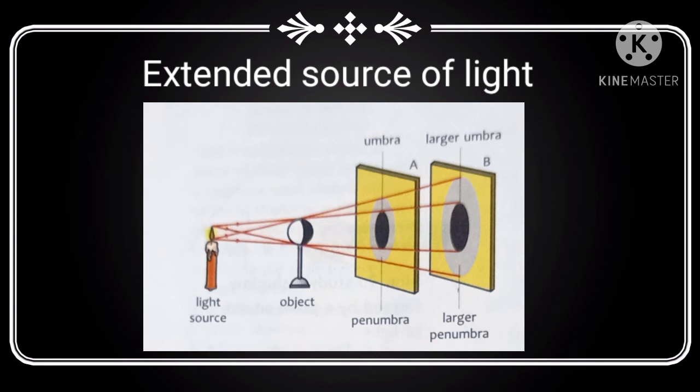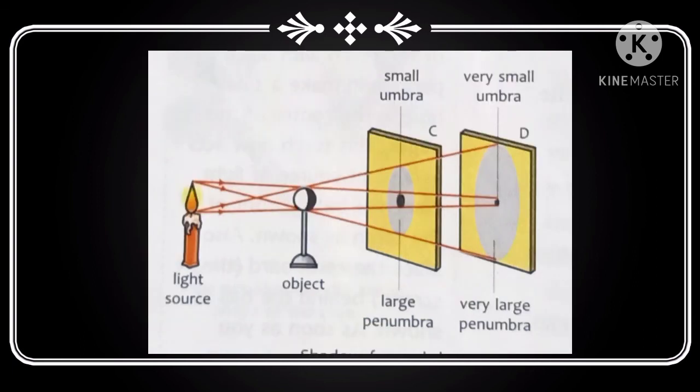An extended source of light possesses an extent and radius. The sun and a torch beam are examples of an extended source of light. An extended source of light produces a shadow with a blurred edge. The shadow formed by a point source of light is very small in comparison to that formed by an extended source of light.